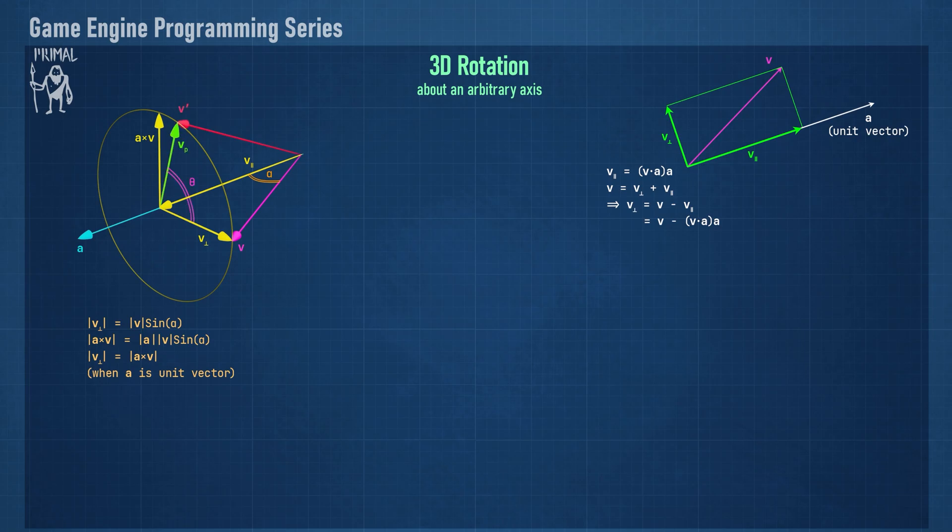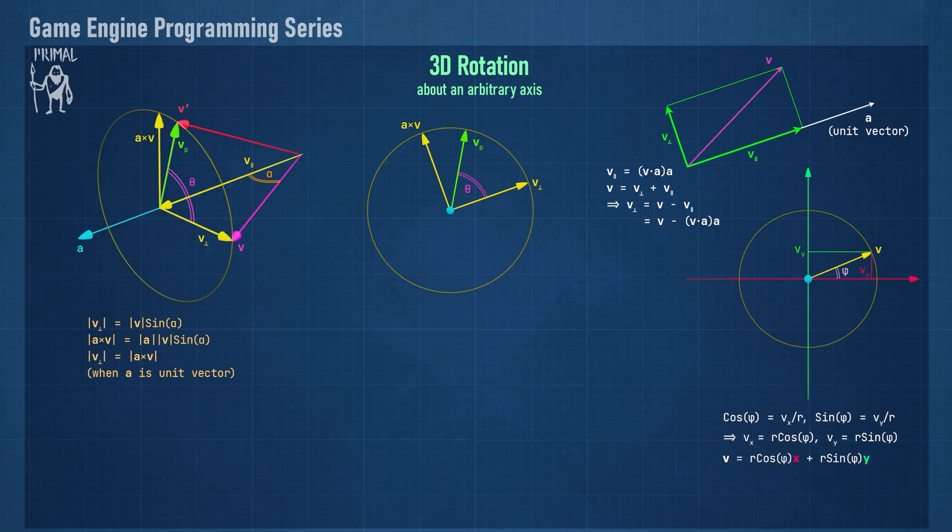Rotating vector v by theta around a will transform v to v prime. It will also transform v perpendicular to v p. Looking at the rotation plane, we see a picture that's quite similar to what we had earlier, where we studied the rotation of v in the xy plane. Except now the x axis is replaced by v perpendicular, and the y axis is replaced by the cross product of a and v.